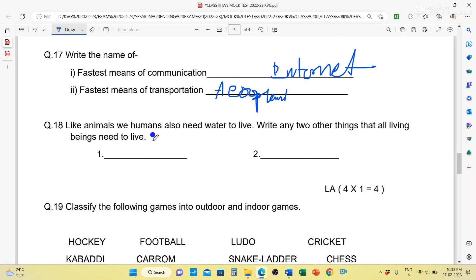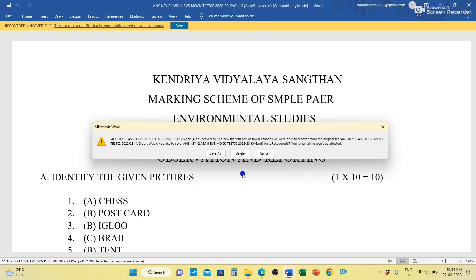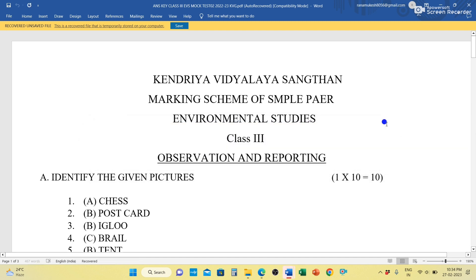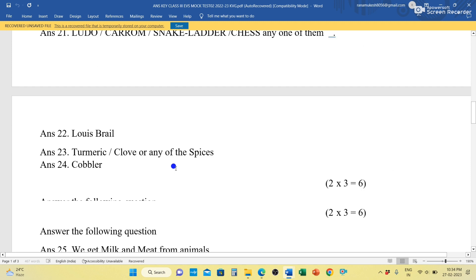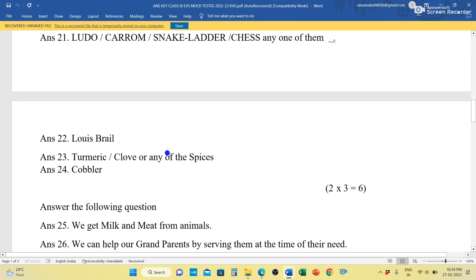Like animals, we humans also need water to live. Write any two other things that all living beings need to live. You can write: we need air, food, shelter. You can write any one.